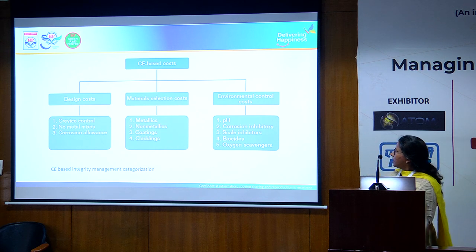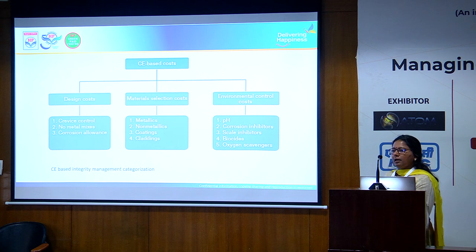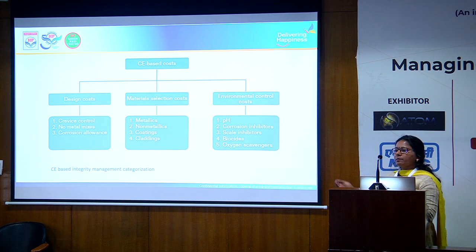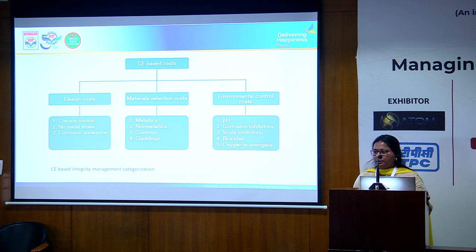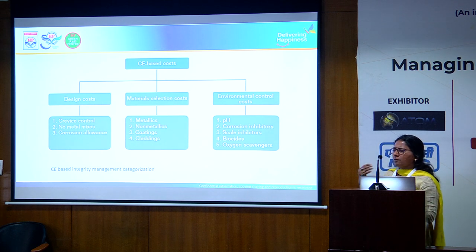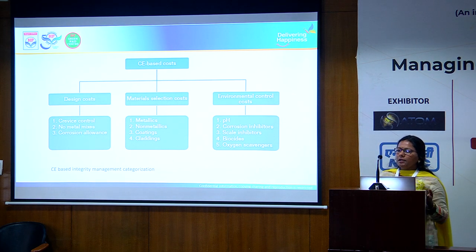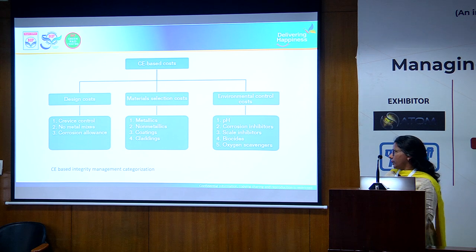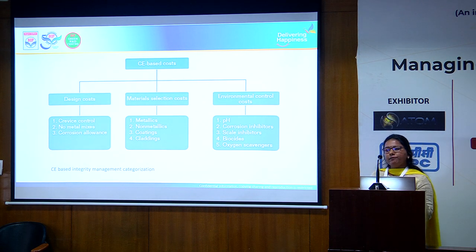Corrosion engineering-based costs start from the design stage. We look at whether there is a free-draining tank, whether there are no crevices or gaps, and that welds are seamless. When it comes to material selection based on the environment in the containment, we go ahead with material selection — for example carbon steel — and then calculate corrosion rate and apply a corrosion allowance over and above that.